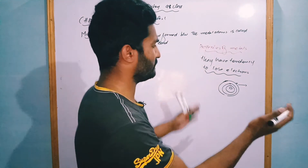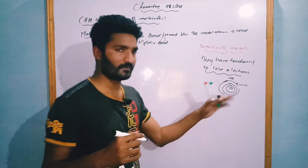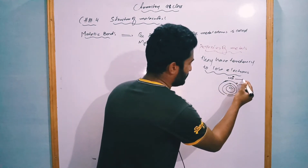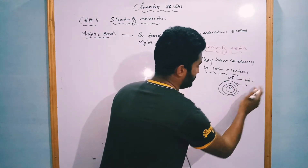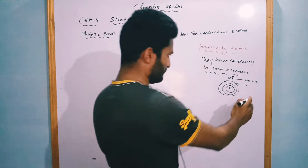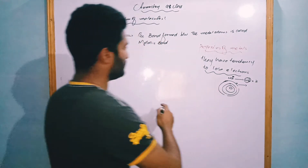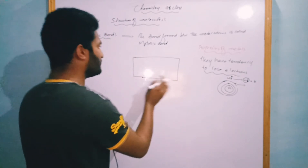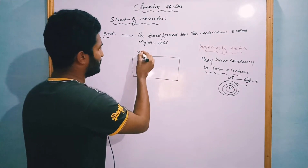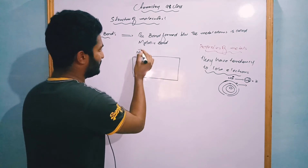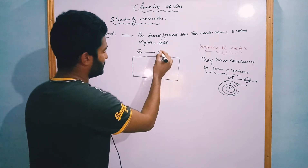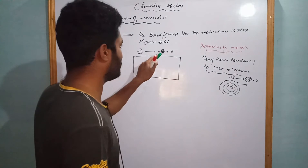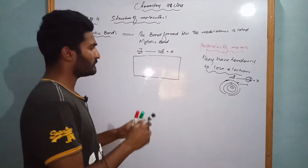For example, if we talk about the sodium atom, there is only one electron in the outer shell of sodium. After losing that one electron, sodium becomes a sodium ion. So after losing one electron present in the outer shell, the sodium atom becomes a sodium ion.